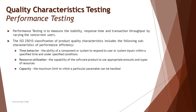What does performance of a system depend on? Is it architecture, resources, or how users interact? There are three major sub-characteristics recognized by ISO 25010 for performance efficiency: time behavior — response times; resource utilization — all hardware used to host the system; and capacity — the maximum limit the system can handle.